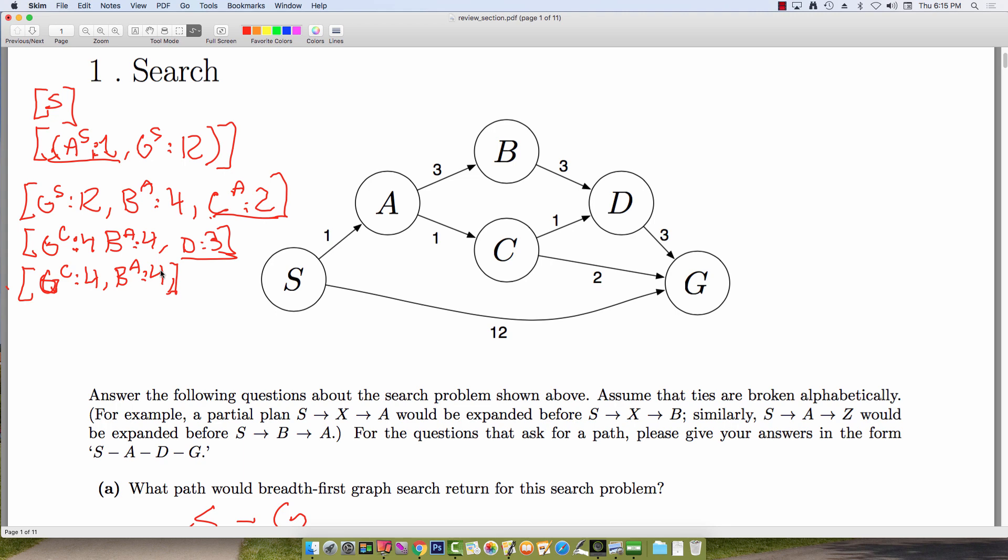At the next step, we have 2 nodes with cost 4. And we can perform tie-breaking. So we would pull B off of the fringe. From B, we can insert D. And so we're left with G. And then D, which will have cost 7. And then we pull off G from the fringe. And we're done. And we have a path of cost 4.